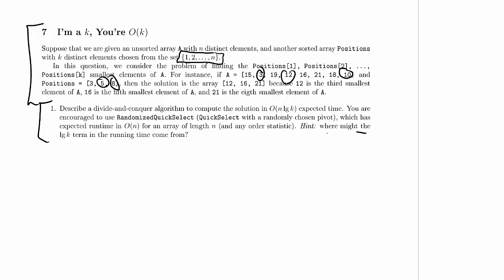The question is: where might the log k term in the running time come from? The array A is of size n and the array positions is of size k. Positions is also sorted — or we could easily sort it in k log k time. So it seems natural that the log k term is going to have something to do with positions, since that's the thing of length k.